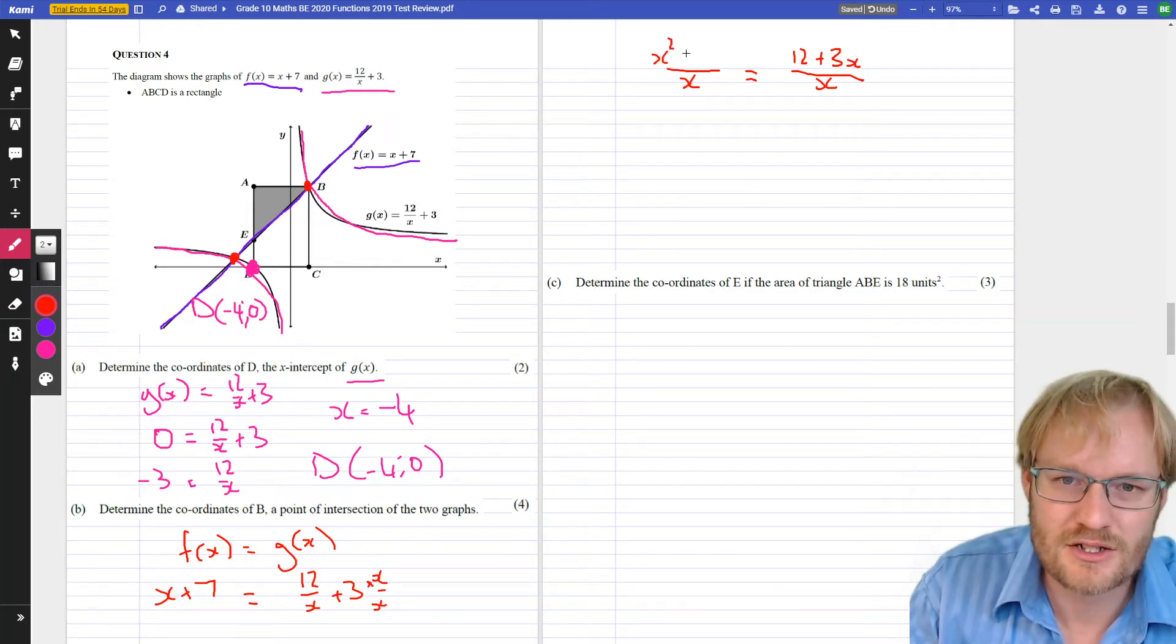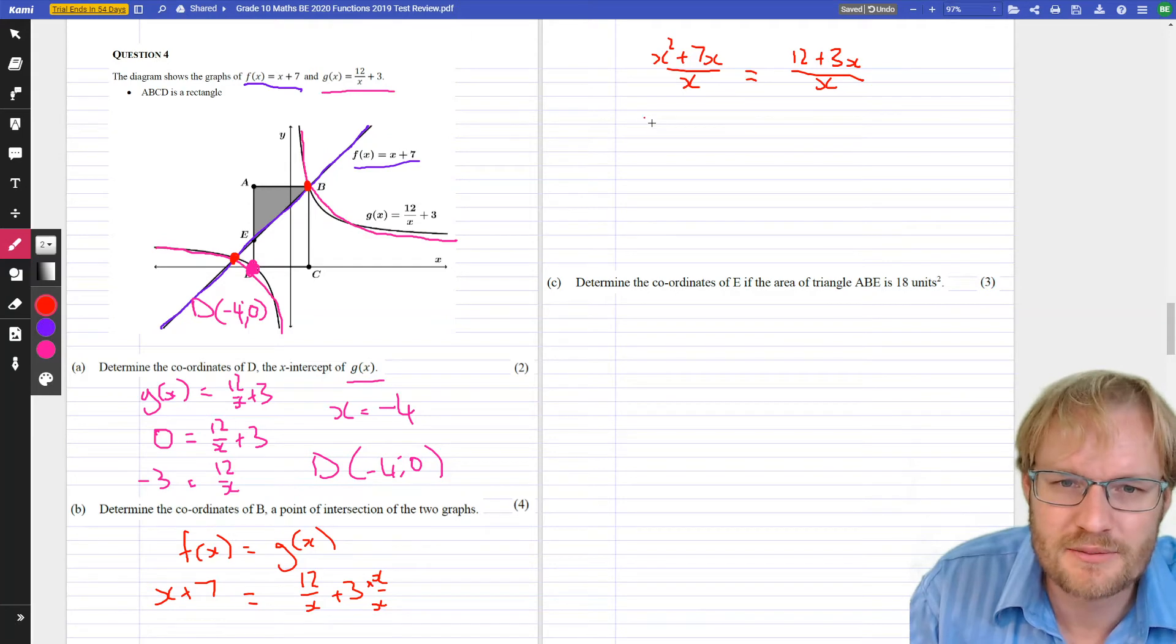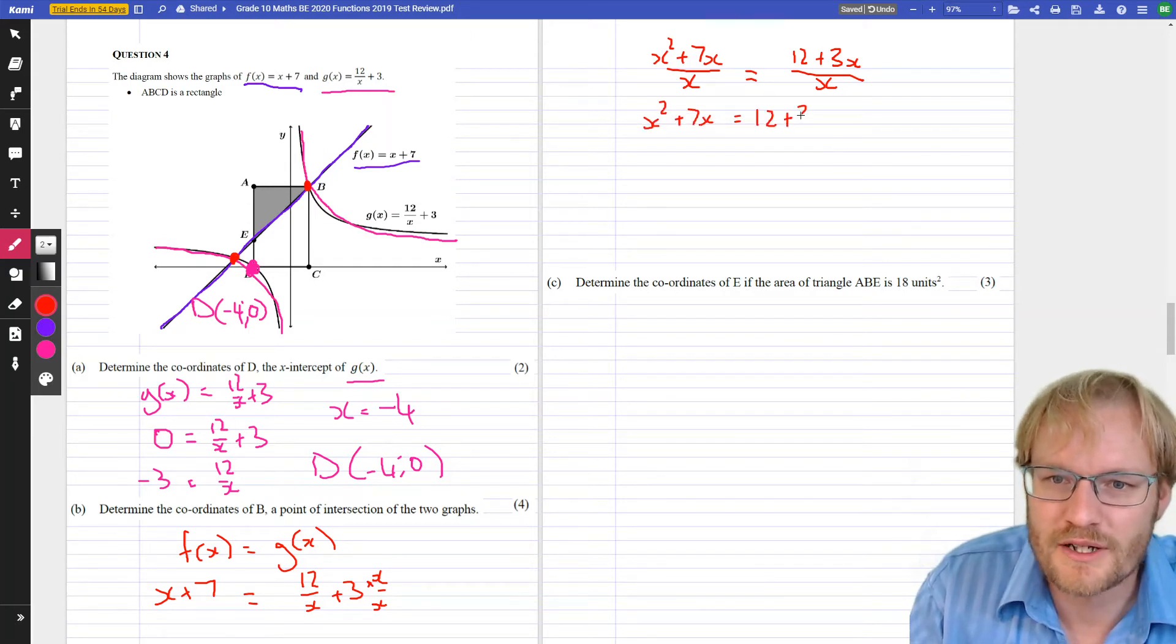We're going to go, this one's X squared plus 7X, and if the denominators are the same, numerators must be the same. So, X squared plus 7X equals 12 plus 3X.